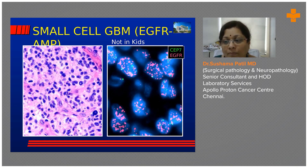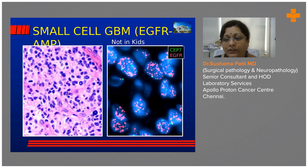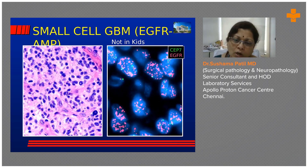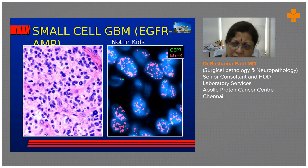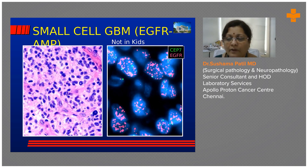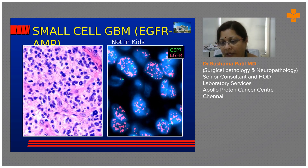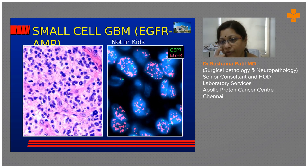This case not only shows EGFR amplification but also polysomy of chromosome 7 — confirming a small cell GBM with EGFR amplification. In older patients with high-grade gliomas, 40 to 50 percent show EGFR amplifications. Importantly, EGFR and IDH1 are mutually exclusive — you will not find both in the same tumor.